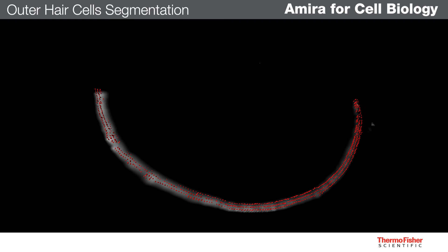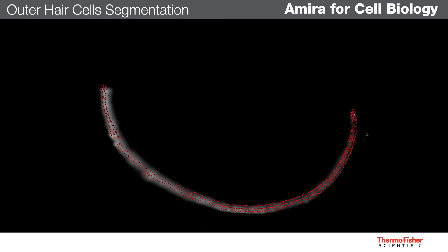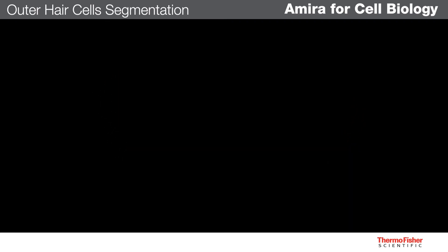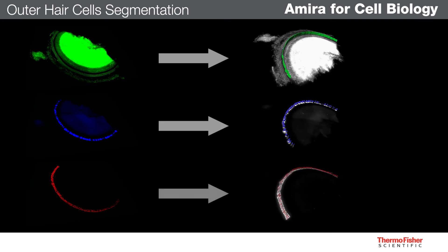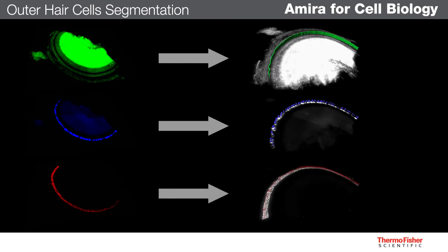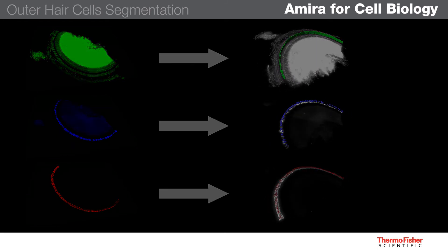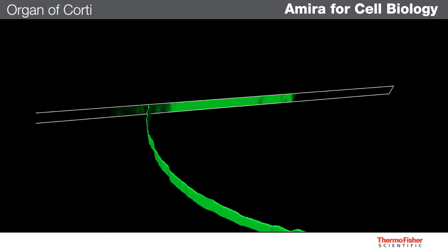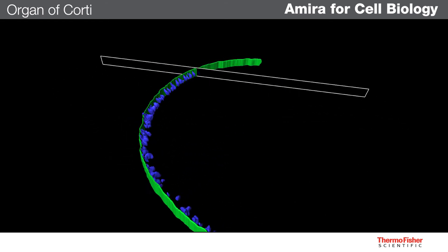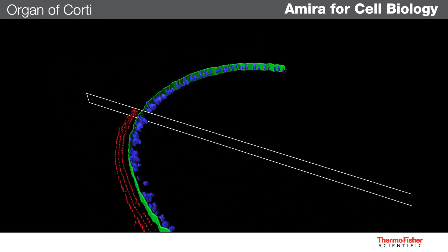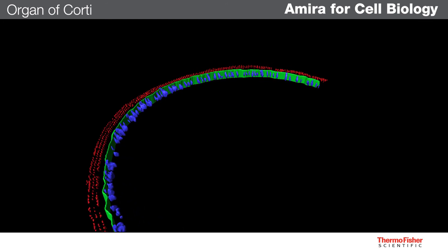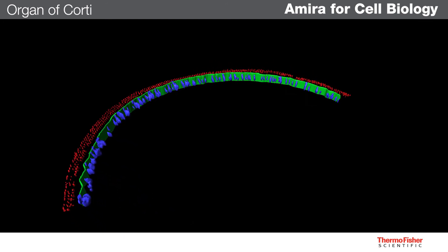The result is a complete segmentation of all outer hair cells using the red channel. Now that we have segmented each structure from its own channel, it's time to consider our results in the context of the whole organ of Corti. All channels and all segmentations are still loaded in the same workspace in AMIRA, so to learn about how they relate to one another, we simply need to visualize them all at the same time.